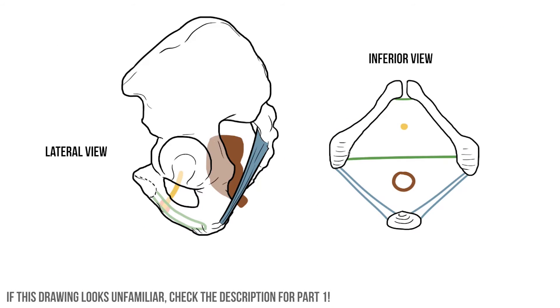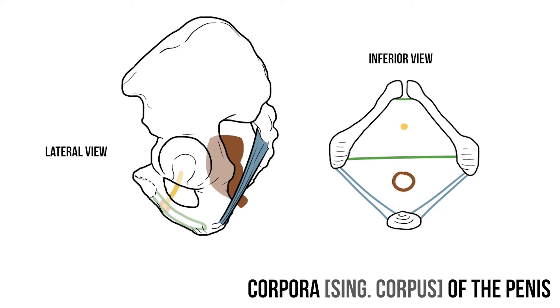The penis is formed by three columns of erectile tissue. We can refer to these as the bodies or the corpora of the penis.